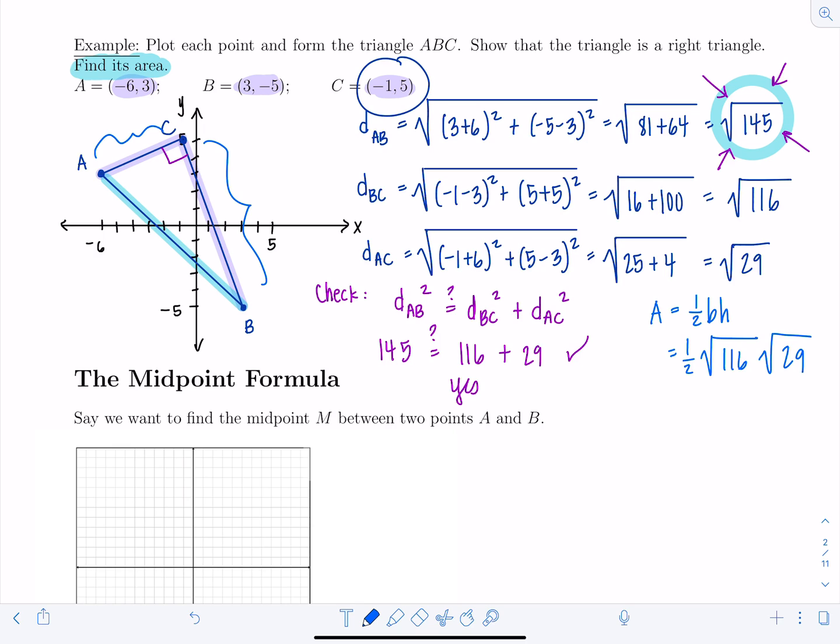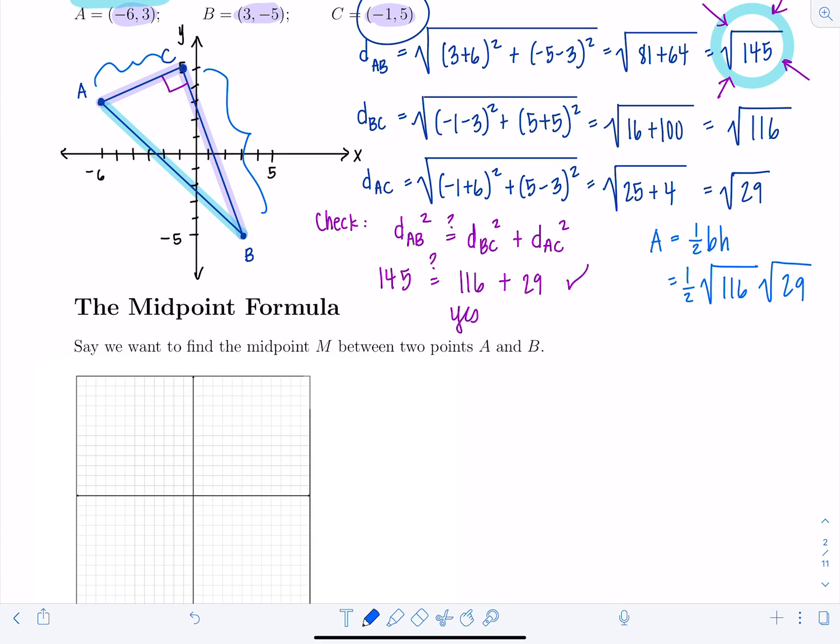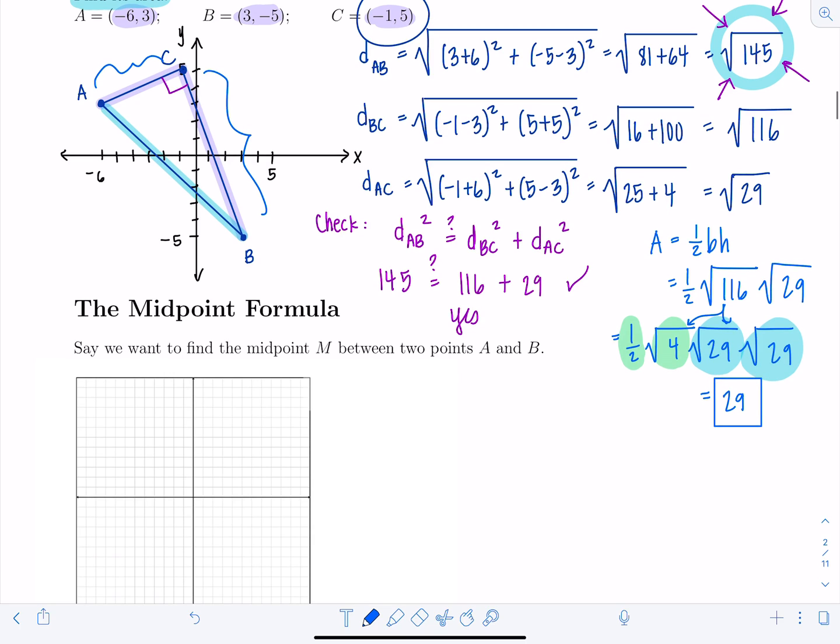And I didn't simplify any of these radicals, but I need to now for this final answer since I'm not just verifying things. So √116, that's divisible by four. So I can write this as one-half times √4 times √29, that's my 116, times √29. And then remember, if I have √29 times √29, that's just 29. Yes. Very good. And then one-half times √4, that's going to cancel out because √4 is 2. So this is all just going to end up being 29. Lo and behold. I know, right? Shocking. Okay.